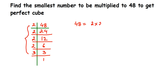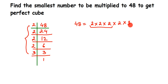Now whenever you're forming a perfect cube, you will get a set of three same factors. For example, 2 × 2 × 2 forms one set. Here I'm getting one set of three 2s, but I don't have a set for the remaining 2 and I don't have a set for the 3. There should be two more factors of 3 and two more factors of 2, but they are missing.